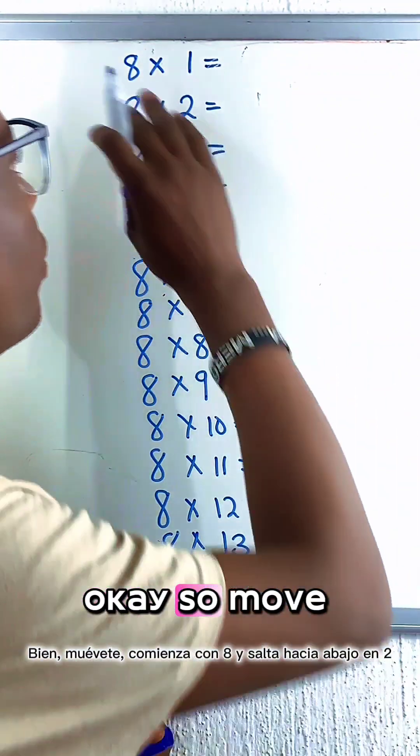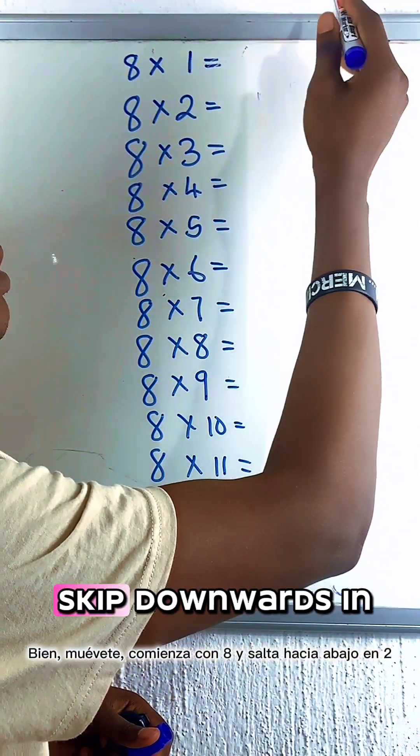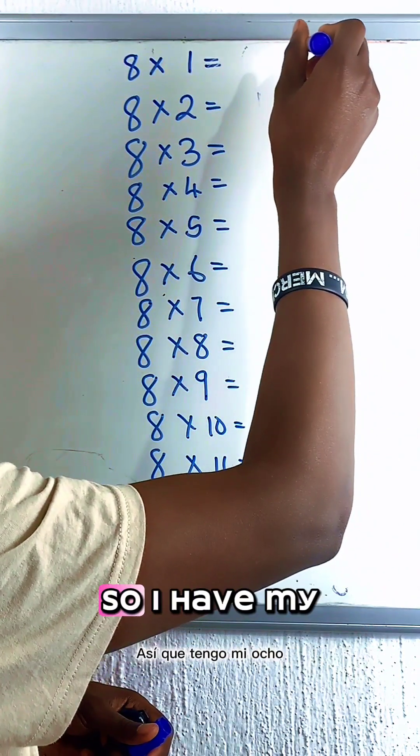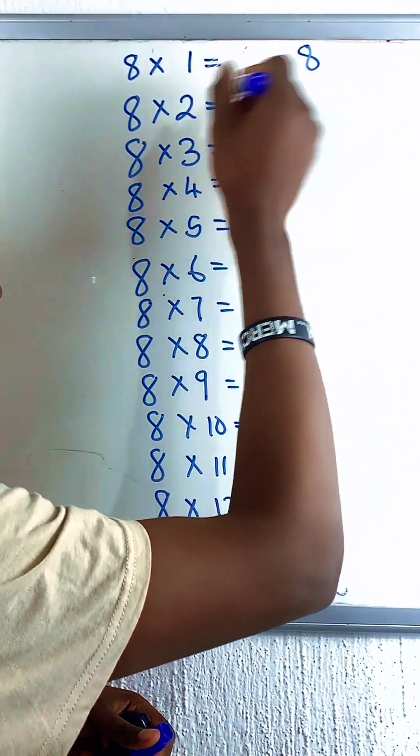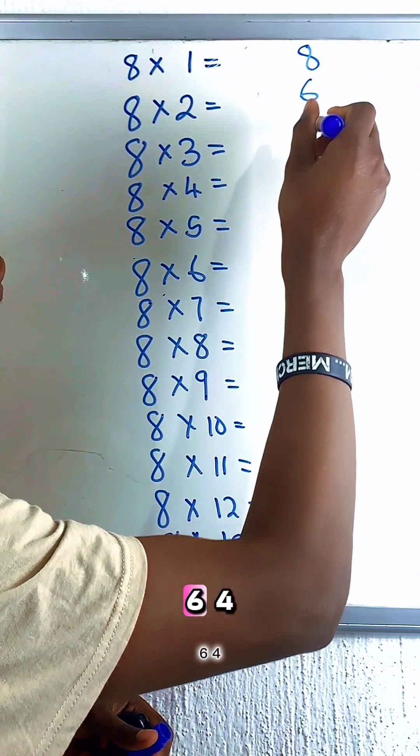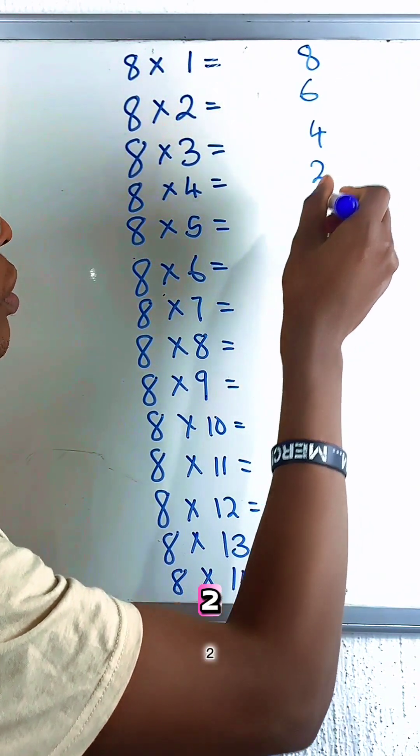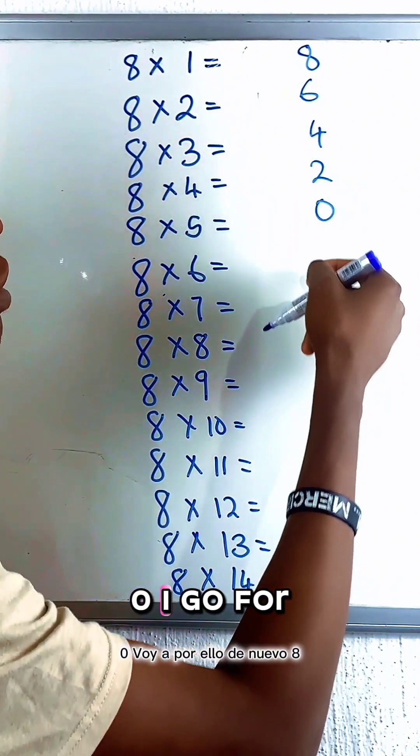Okay, so we'll start with 8 and skip downwards in 2. So I have my 8, 6, 4, 2, 0. I go for it again.